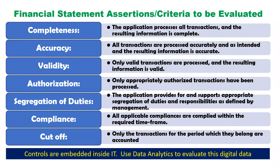If you take an example of a financial statement audit, this gives you the seven key information criteria which are to be evaluated. The first thing you want to check is completeness — whether the software application processes all the transactions and the resulting information is complete. Next, you check accuracy — the correctness of the data, whether all transactions processed in the information system are processed correctly and completely. You also need to check the validity of the information — whether all transactions entered into the computer system are valid and the resulting information is processed correctly.